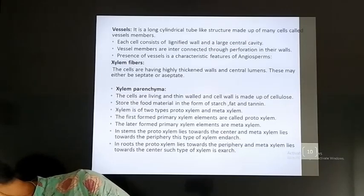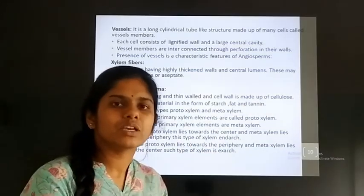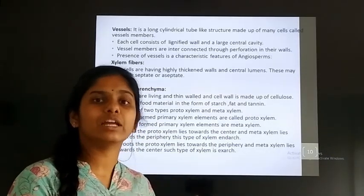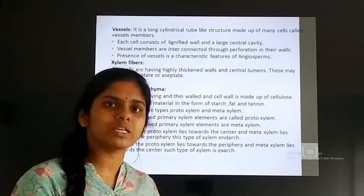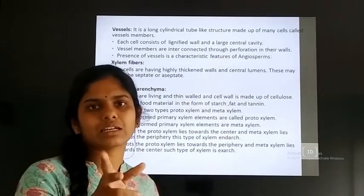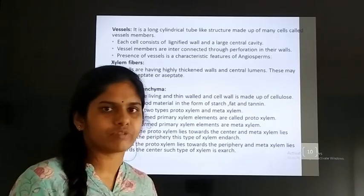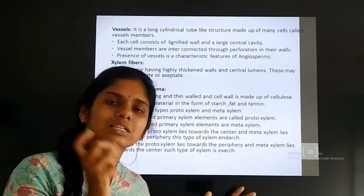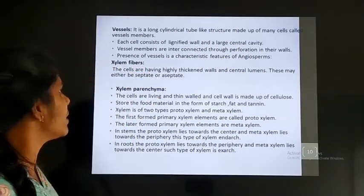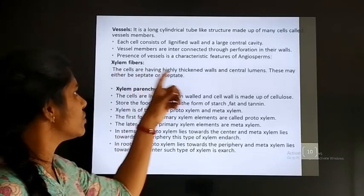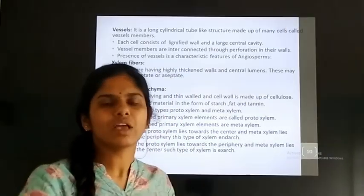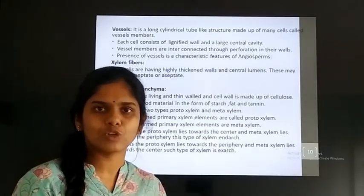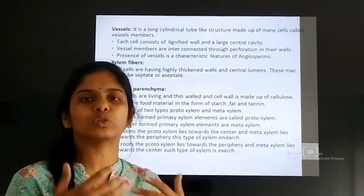Next, come to xylem fibers. Xylem fibers are xylary elements which consist of sclerenchyma-type cells, so they are called xylem fibers. These are cells with thick, lignified cell walls and empty lumen — a dead tissue that gives mechanical support to the plant.